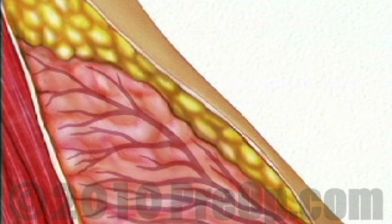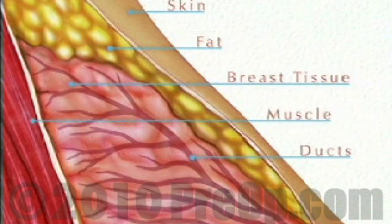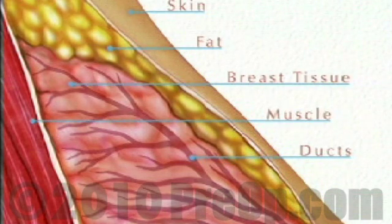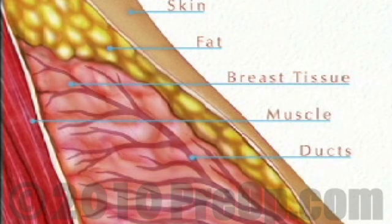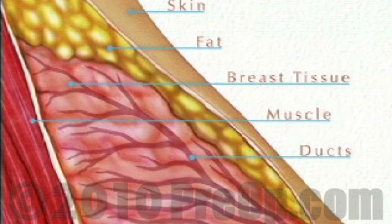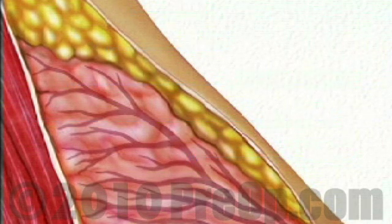The breast is made of layers of skin, fat, and breast tissue, all of which overlay the pectoralis muscle. Breast tissue itself is made up of a network of tiny milk-carrying ducts, and there are three ways in which a lump can form.